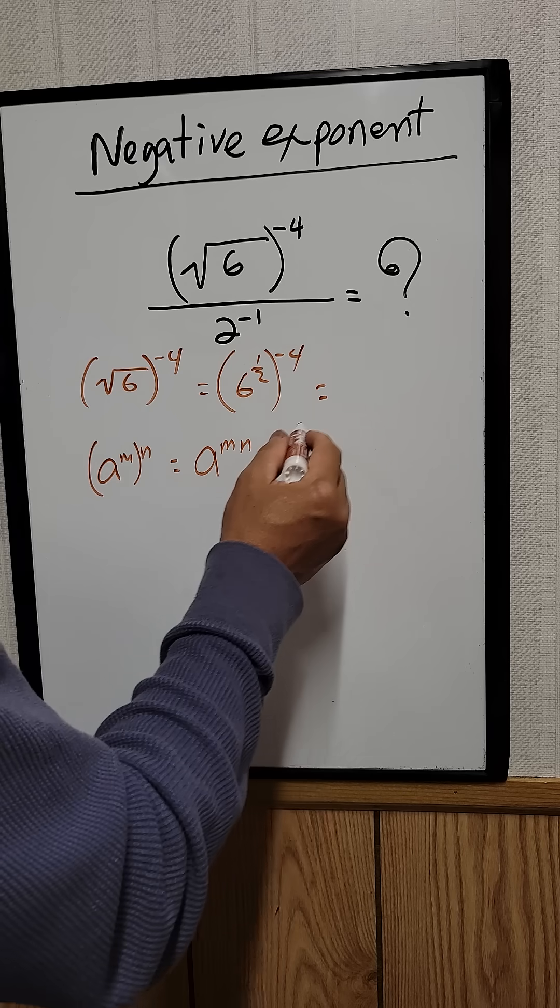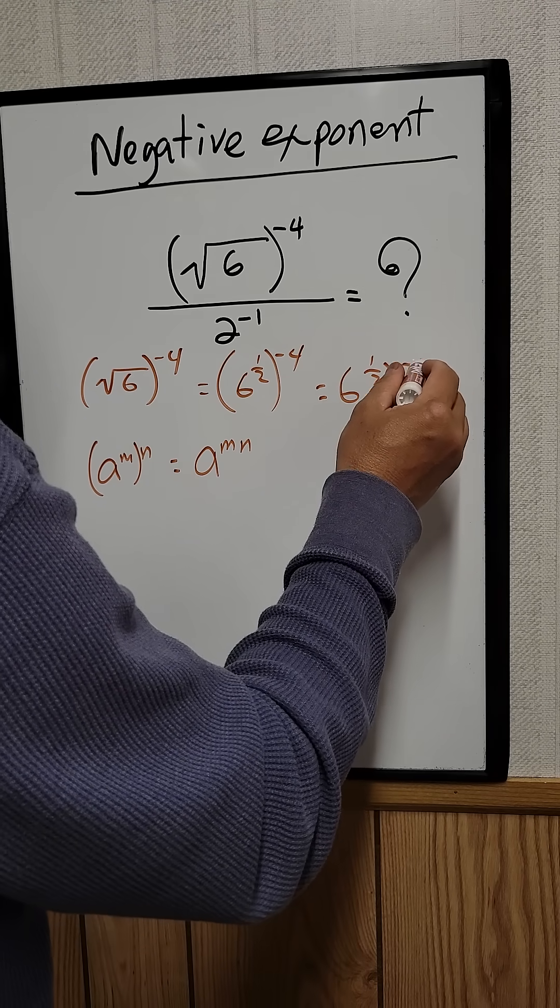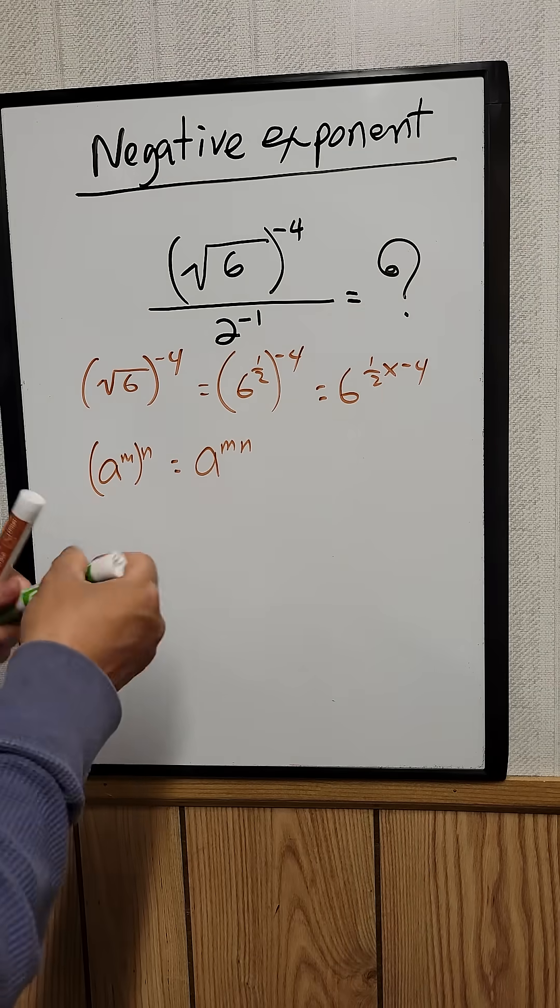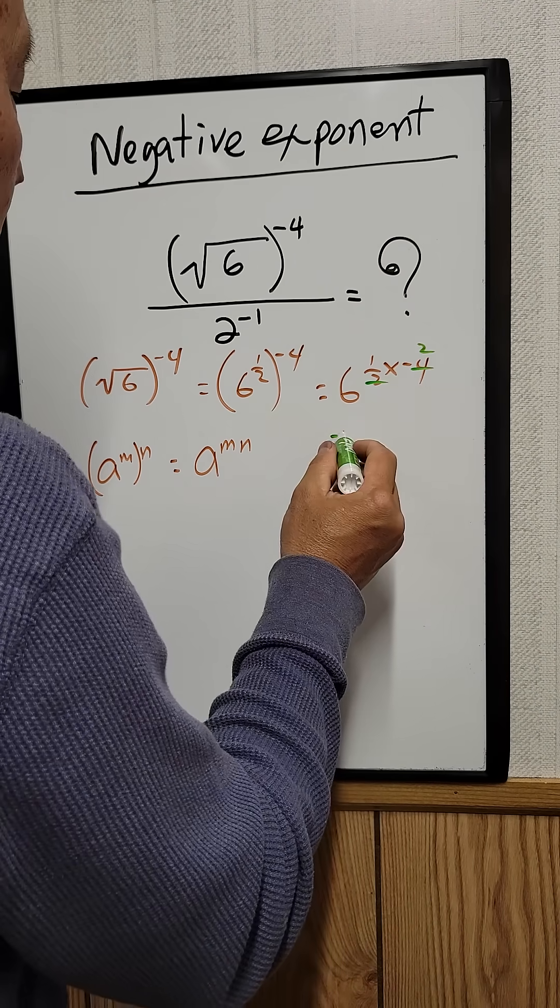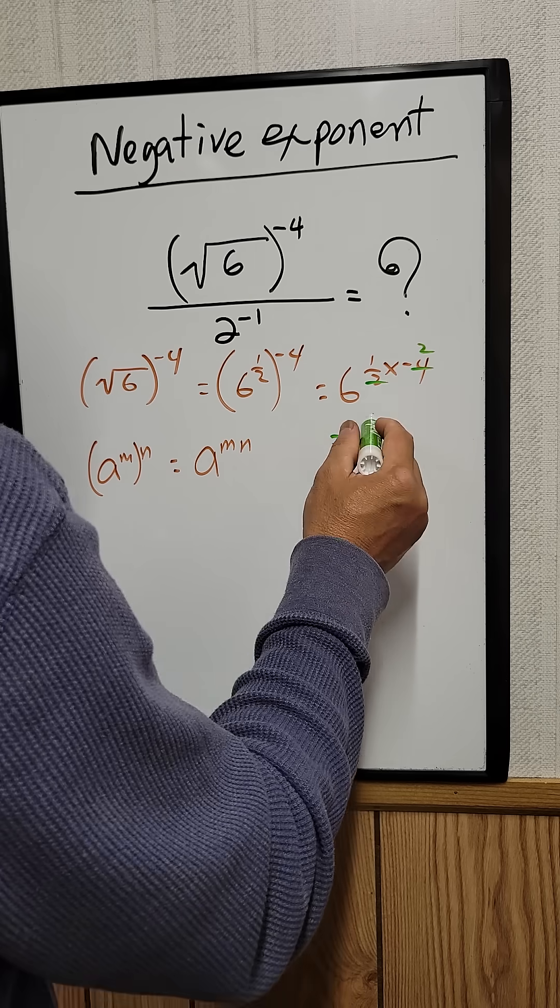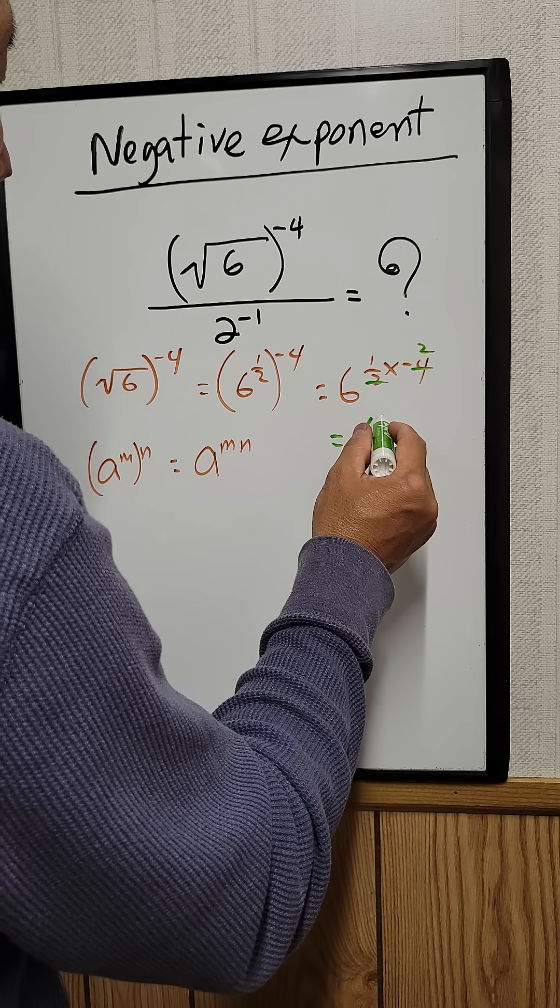Now we're going to apply this rule. We can say that 6 raised to the 1/2 times negative 4. So cancel out the 2, that's equal to negative 2. So this is equal to 6 raised to the negative 2.